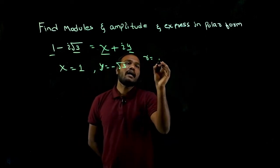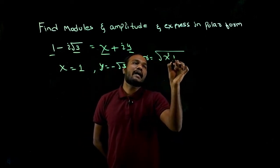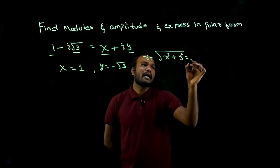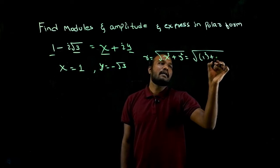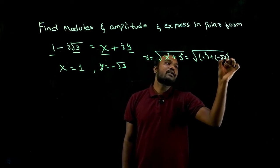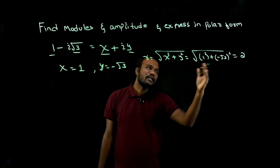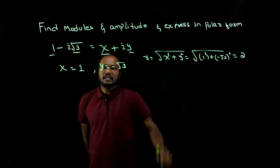And what is R? R is the root of x square plus y square. So R, that is amplitude, that is nothing but 1 square plus minus root 3 whole square. That is nothing but 2. You can put this in calculator, we'll get it as 2. Modulus is done.